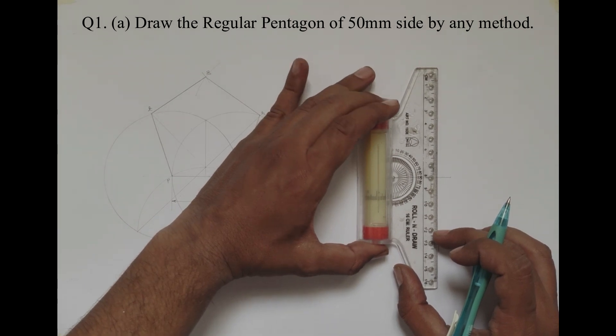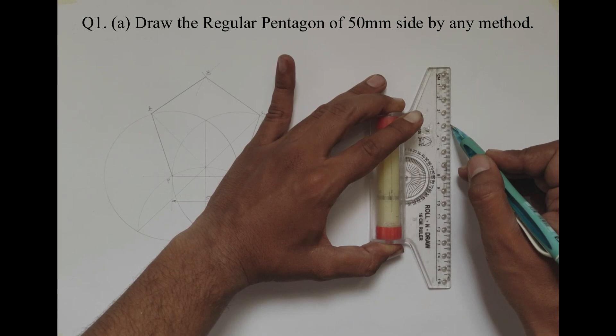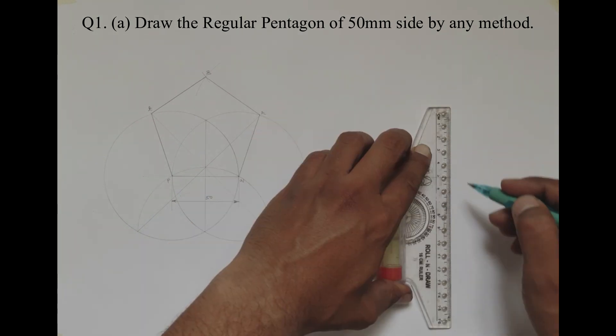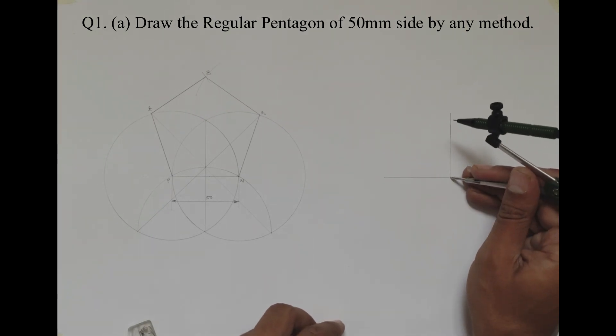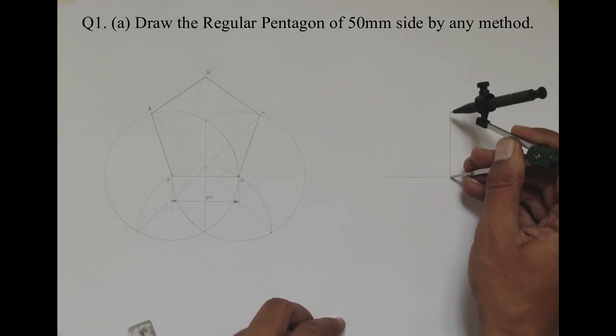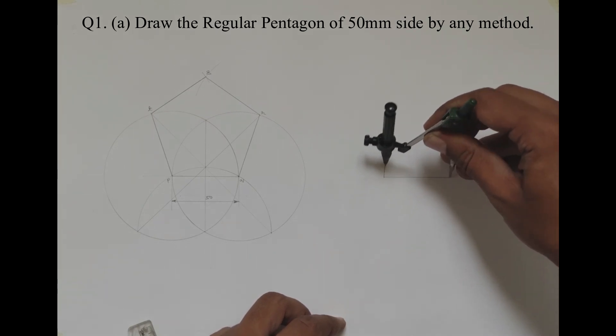Then you have to draw a perpendicular line to this line of the same dimension, that is 50mm. Once you have drawn these two lines, you have to take a compass and draw the arc joining both ends.